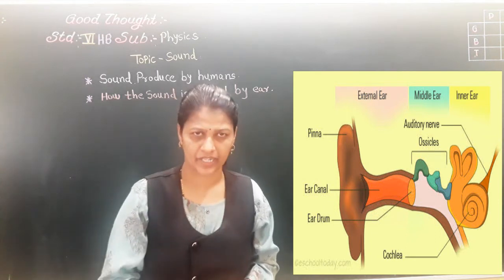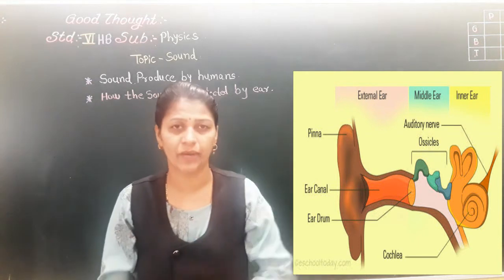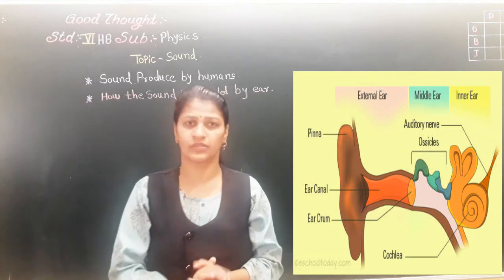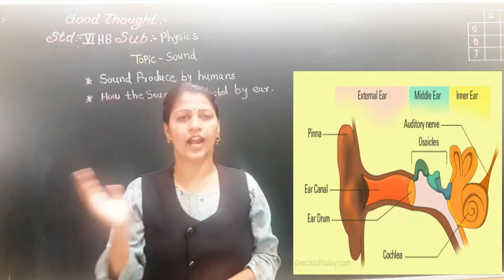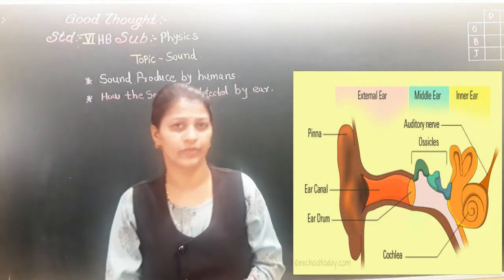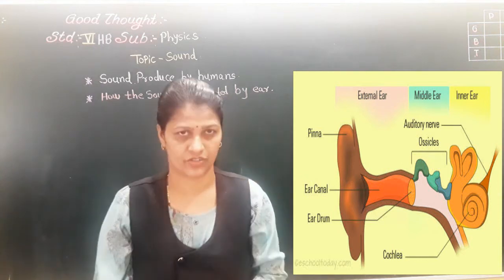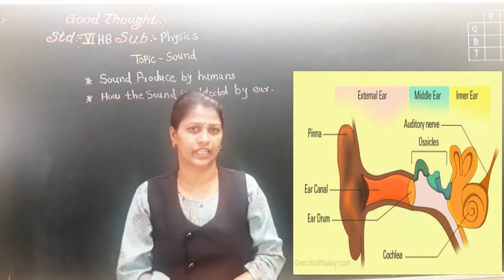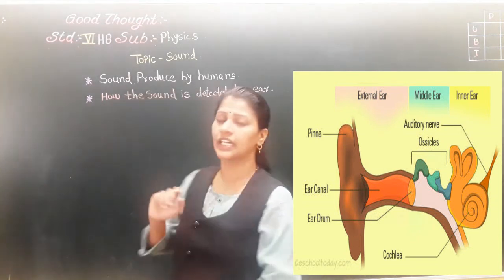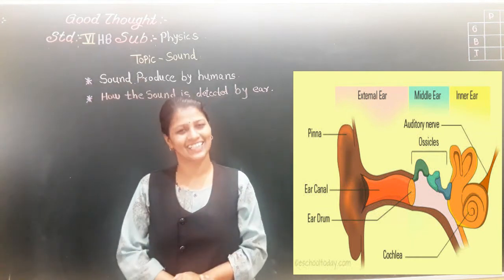Your eardrum starts to vibrate. My voice is loud so you can hear my sound. Around me there are also sounds of birds — can you hear them? No, because my sound is very large, so only that dominant sound is detected. So that is how sound is detected by our ear.